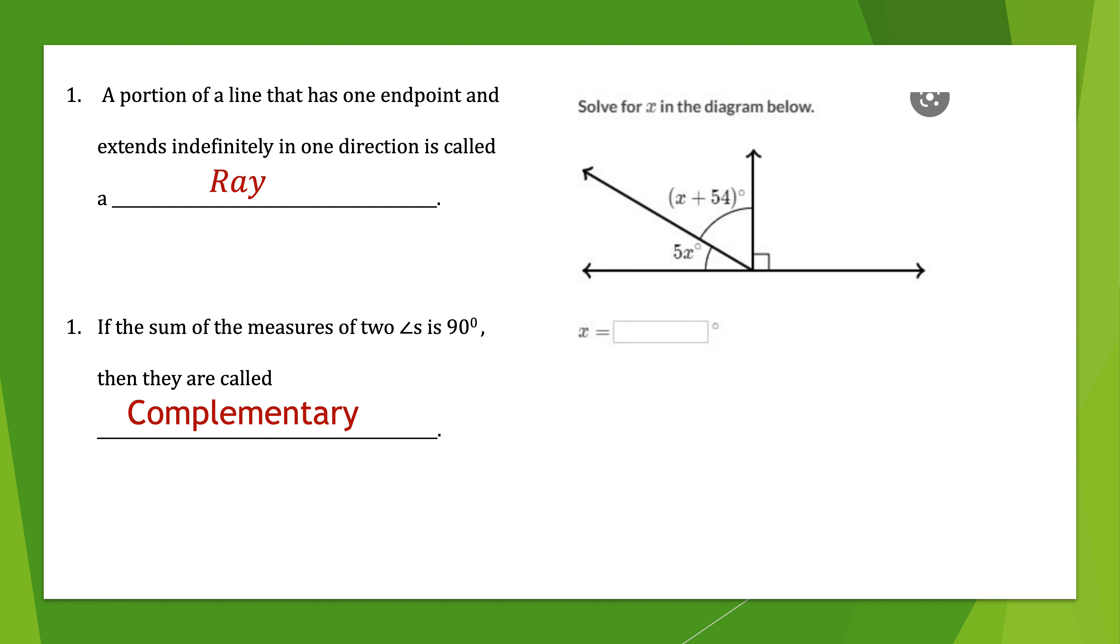Remember, C comes before S, so complementary means 90, supplementary means 180. As C comes before S and 90 comes before 180, C, complementary means two angles add up to 90. S, supplementary, two angles add up to 180. And this next situation is a picture of complementary. We know the angle on the right-hand side of the vertical line is a right angle.